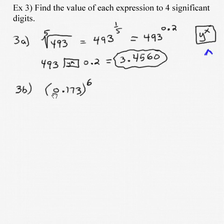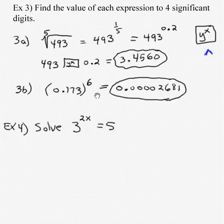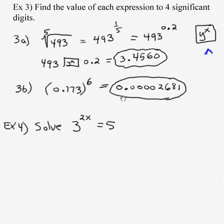Alright, how about 0.173 to the sixth power. We take that. Type the base in. Hit the y to the x, or our exponent function. Put the sixth power in. We get 0.402681. Now I know we said round to four places. But if we have two or three or four zeros, let's go to four non-zero places.